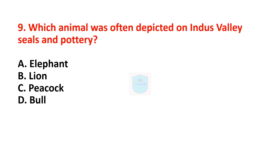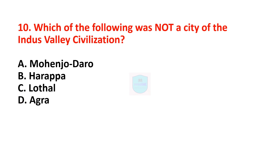Next question: which animal was often depicted on Indus Valley seals and pottery? Correct answer is bull. Bull was often depicted on Indus Valley seals and pottery. Next question: which of the following was not a city of the Indus Valley Civilization? Correct answer is Agra. Agra was not a city; Mohenjo-daro, Harappa, and Lothal are all cities of the Indus Valley Civilization.